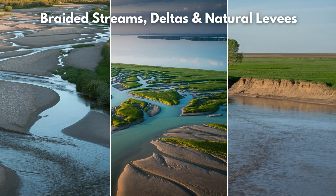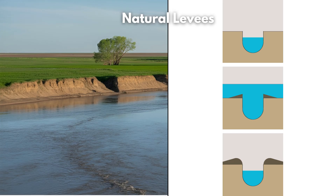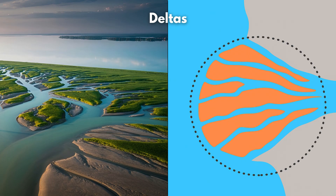Hey there guys, Buddy here. So the three main fluvial landforms that are going to be created by deposition will be braided streams, natural levees and deltas.